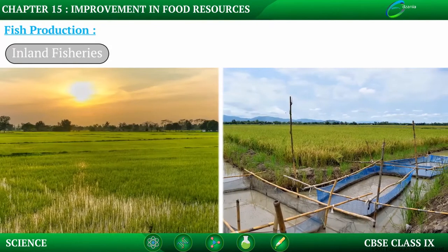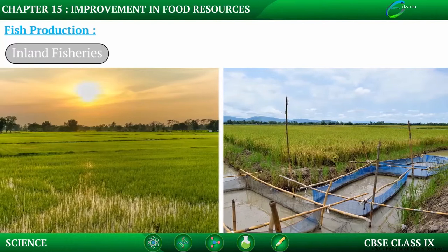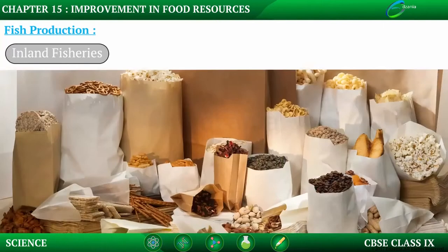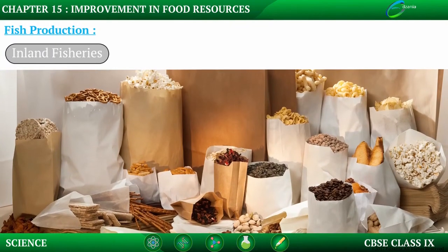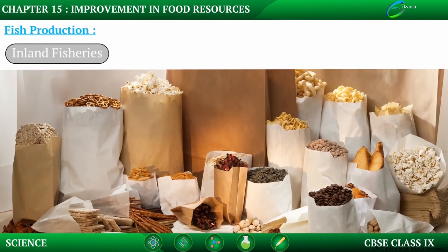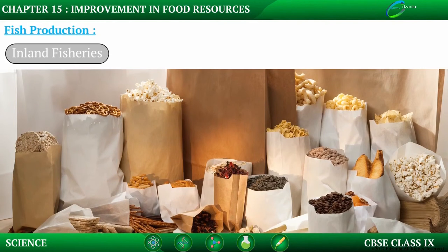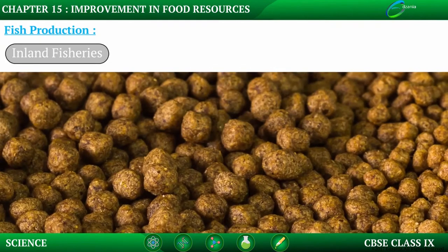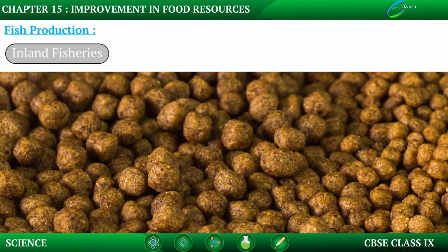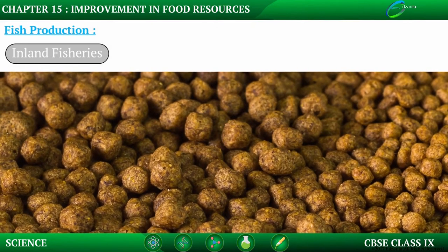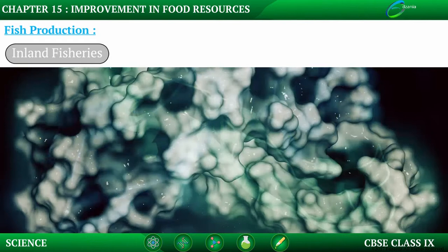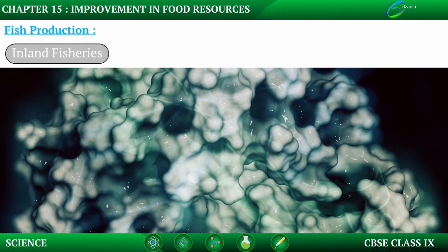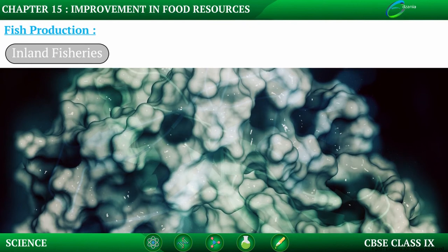Inland fisheries are sometimes done alongside rice crops, as farming of rice occurs in paddy fields. For proper inland fisheries, we need proper fish seeds, meaning proper breeds of fish. A major problem in fish farming is the lack of availability of quality seed or quality breed. To overcome this problem, hormonal stimulation is now used for the production of different types of fish breeds.